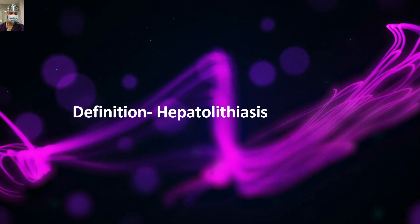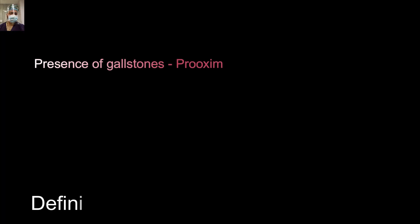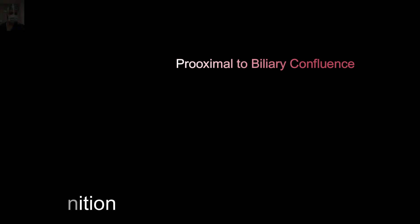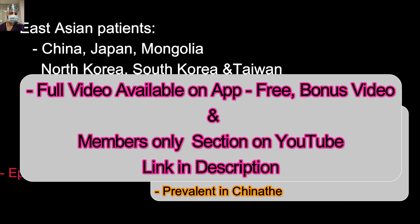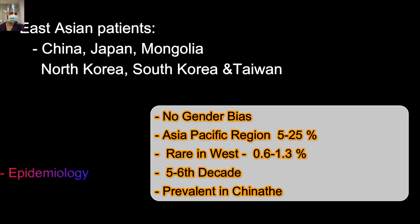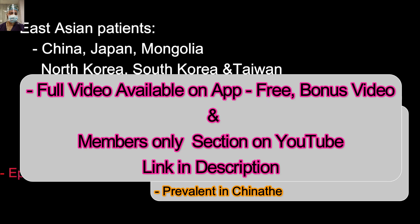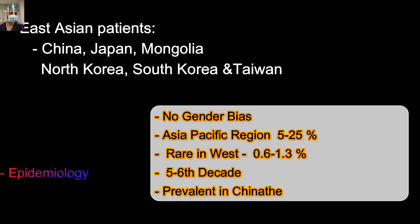Coming to the definition of hepatolithiasis: it is straightforward — the presence of gallstones proximal to the biliary confluence. So if stones are present in the right hepatic duct or the left hepatic duct, proximal to the common hepatic duct, it is a case of hepatolithiasis. This disease is endemic mainly in the Asia-Pacific region, Southeast Asia, and East Asia — countries like China, Japan, Mongolia, North Korea, South Korea, and Taiwan. India also has some cases. There is no gender bias — it affects males and females equally.